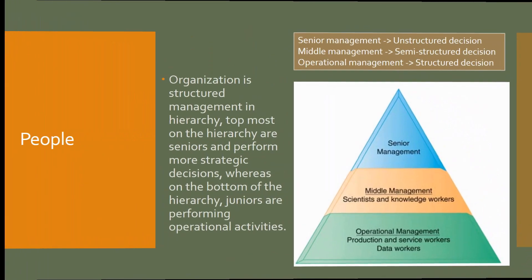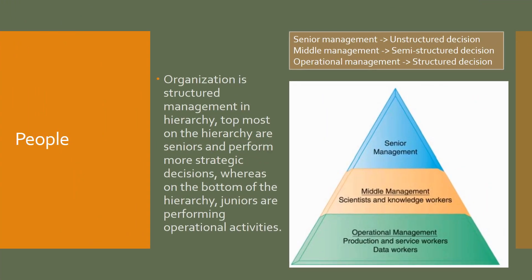These management levels are involved in various types of decision-making. Unstructured decisions, which require insight and personal point of view, are handled by senior management — for example, launching a new product. Middle management is involved in semi-structured decisions, which are mixed-type situations — for example, delivering a parcel to another city. Operational staff handle mostly structured decisions — for example, counting stock of an item in a store.